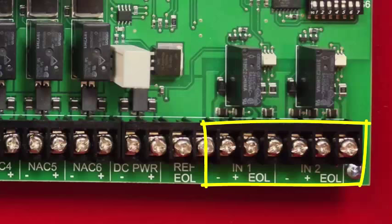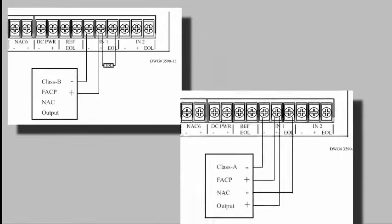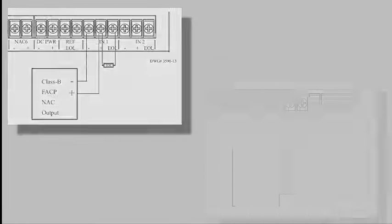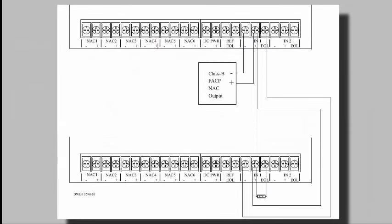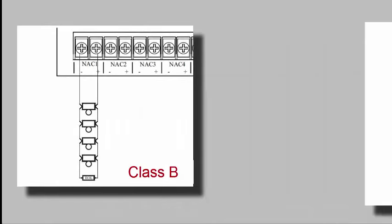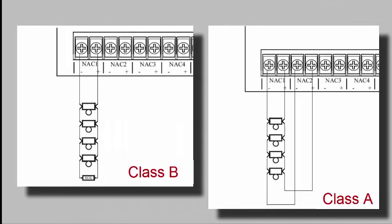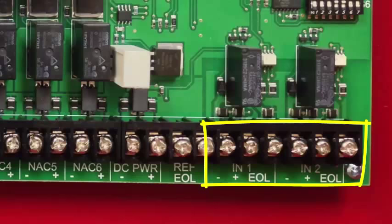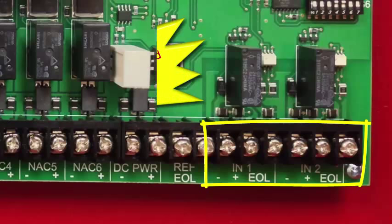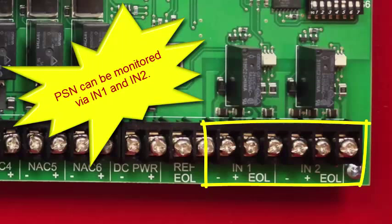Input one and two can be connected to a class B or class A trigger circuit as seen here. Multiple power supplies can be triggered by the same circuit. Remember to install an end-align resistor at the last power supply. Each NAC output circuit is individually selectable for class A or B operation. This is done through the dip switch programming. Another thing to note about the two input triggers is that they have built-in trouble monitoring relays, which means that supervision of this power supply can be accomplished through the trigger inputs and there is no need to monitor the dedicated trouble contact.